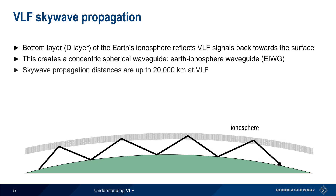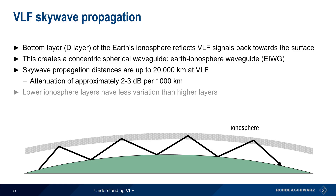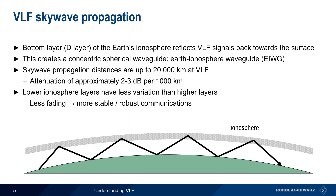VLF signals can propagate via sky wave for distances of up to 20,000 kilometers, and they experience relatively low loss. Attenuation is approximately 2 to 3 dB per 1,000 kilometers. Because the lower layer of the ionosphere has less variation than the upper layers, there is much less fading at VLF compared to other ionospheric communications, such as the more common HF sky wave propagation.